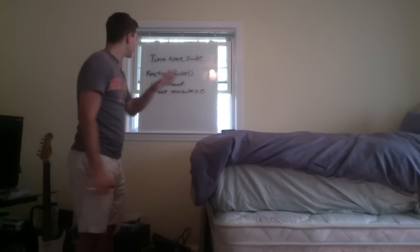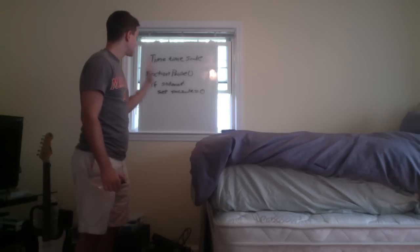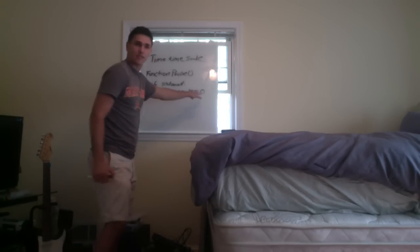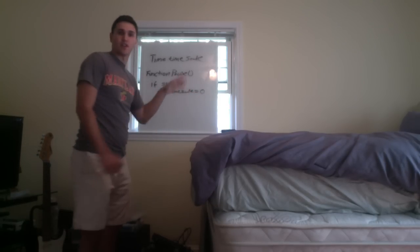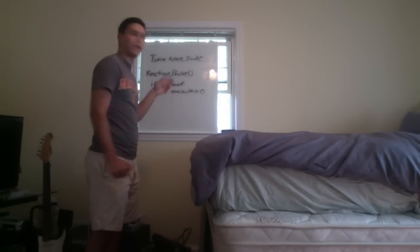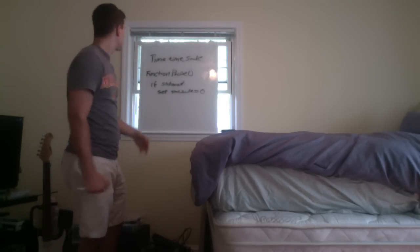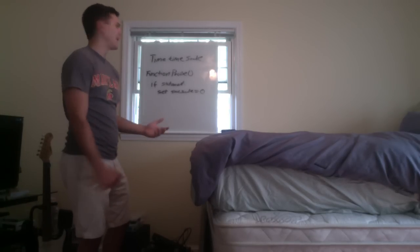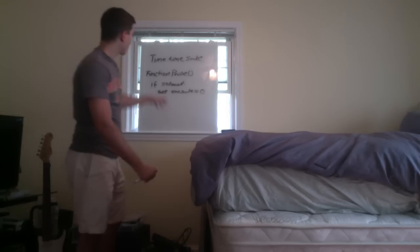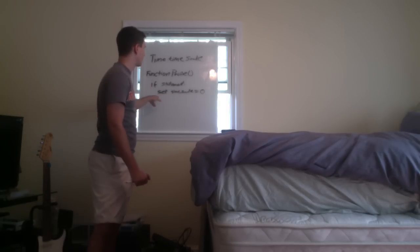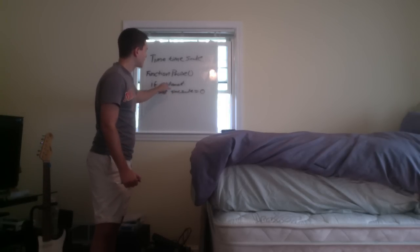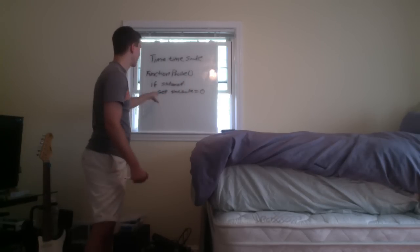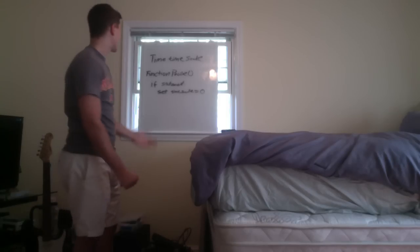So right now our if statement says: if Time.timeScale equals 1, set timeScale to zero — that's our pause. But what if we hit the P key again? We want to unpause it. You could write a new unpause function, but why make extra work for yourself? Figure out how you can use an else statement: if Time.timeScale equals 1 set it to zero, else set Time.timeScale back to 1. Test that out and see if it works.